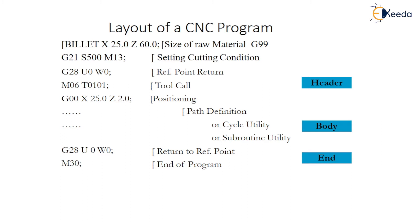This part comes under the header. The header part is always at the first or start of the program — that is the same part in every type of CNC programming. Because that part is just initialization of the system or initialization of the machine, similar to how we use header files in programming. Those header files are always the same for every program. For CNC turning, they are the same; for CNC milling, they are different.